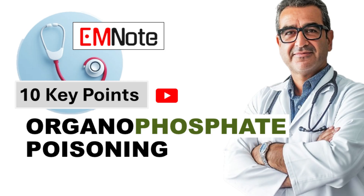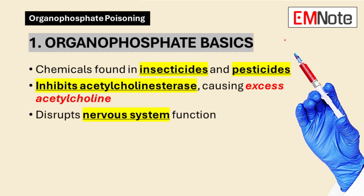10 Key Points About Organophosphate Poisoning. Point number 1: Organophosphate Basics. Organophosphates are chemicals commonly found in insecticides and pesticides. These substances disrupt the nervous system by inhibiting acetylcholinesterase, an enzyme crucial for breaking down the neurotransmitter acetylcholine. This disruption leads to an excess of acetylcholine, causing a range of symptoms.